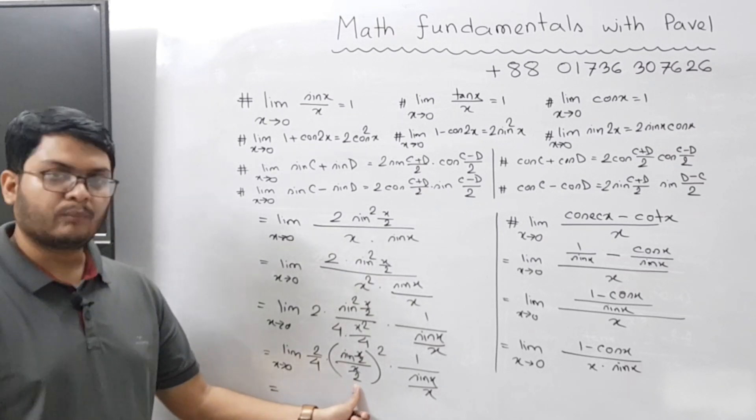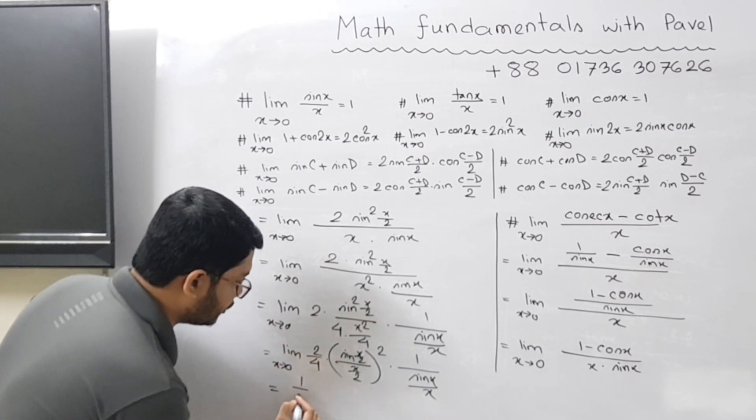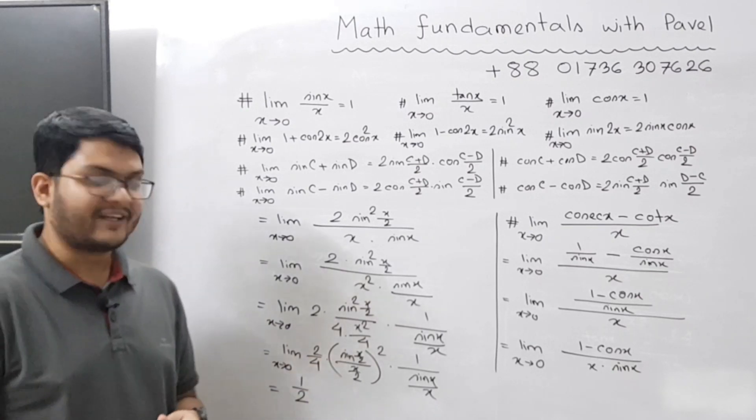Now this part will become 1, this part will also become 1. You are left with 2 by 4, which is equal to half. Very easy.